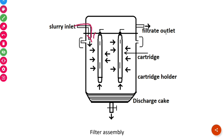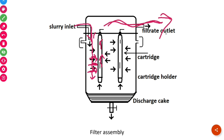Through the slurry inlet, slurry is introduced into the cartridge holder. The slurry passes through the filtration unit by a straining or sieve-like mechanism. The liquid from the slurry passes upward through the filter unit and is collected through the filtrate outlet. The solids present in the slurry are retained on the surface of the membrane filter. After the filtration operation, the solid cake is removed through the discharge outlet at the bottom of the cartridge holder.